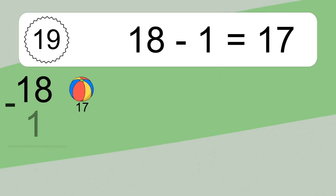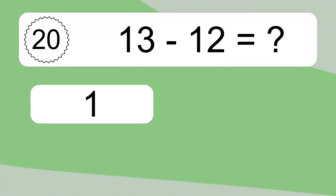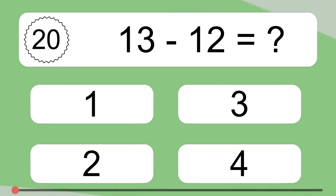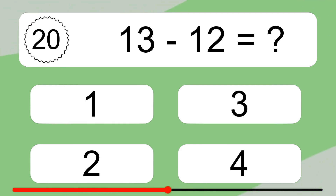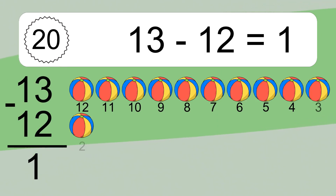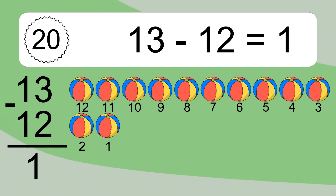6 minus 5 equals 1. Let's count it: 5, 4, 3, 2, 1. 18 minus 1 equals what? 18 minus 1 equals 17. Let's count it: 17. 13 minus 12 equals what? 13 minus 12 equals 1. Let's count it: 12, 11, 10, 9, 8, 7, 6, 5, 4, 3, 2, 1.